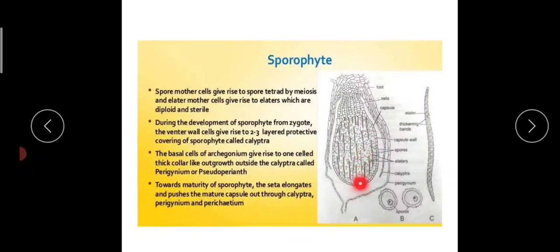This pressure causes the protective layers to rupture. The capsule is surrounded by a single-layered sterile jacket, and the cells in that jacket layer have annular thickenings.